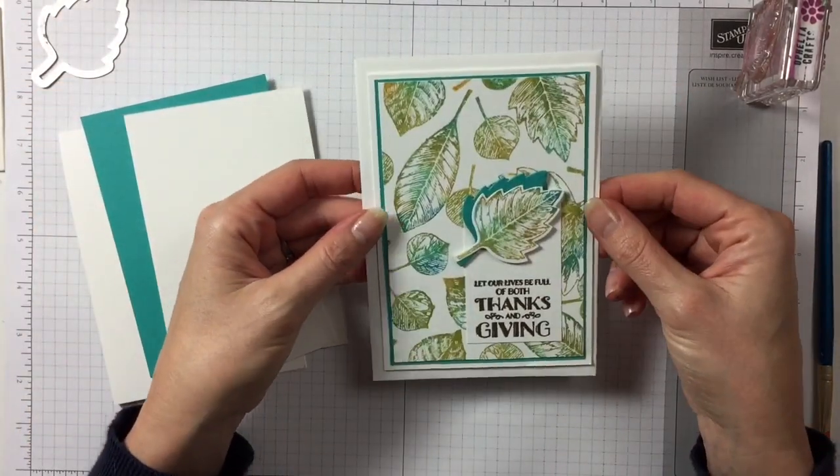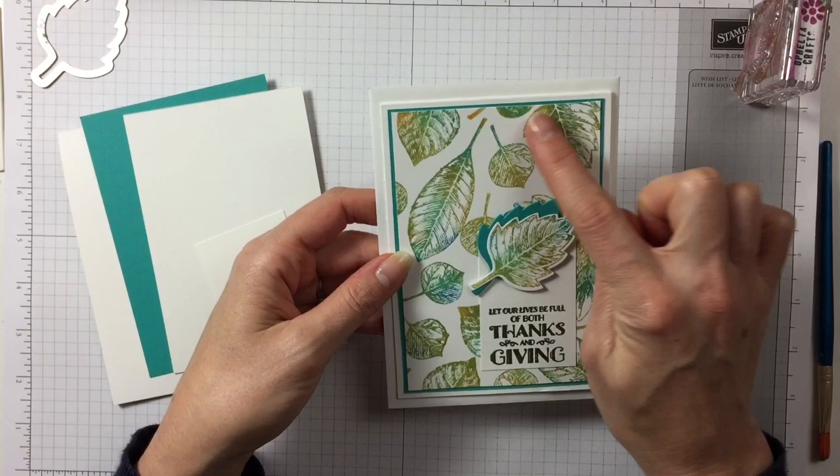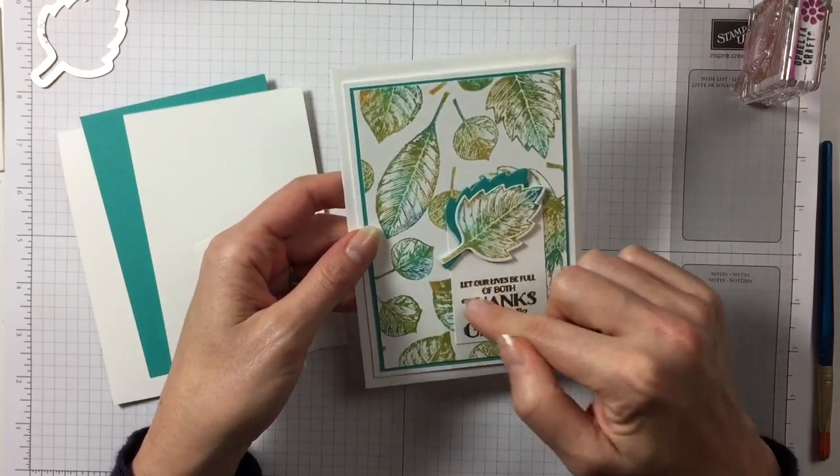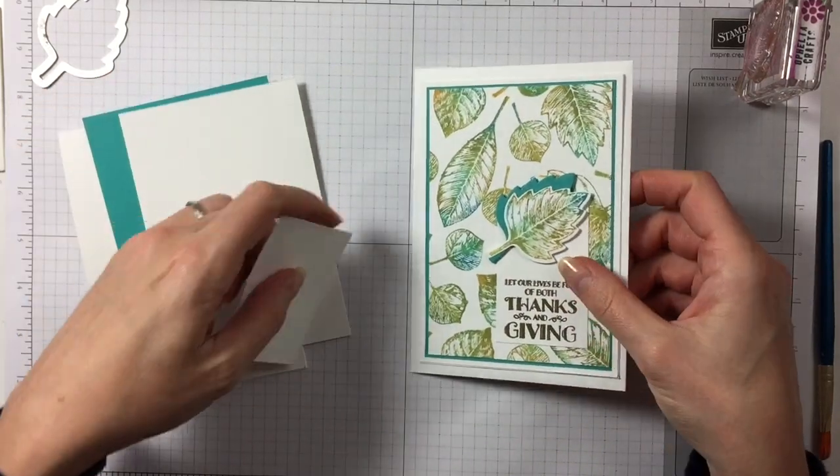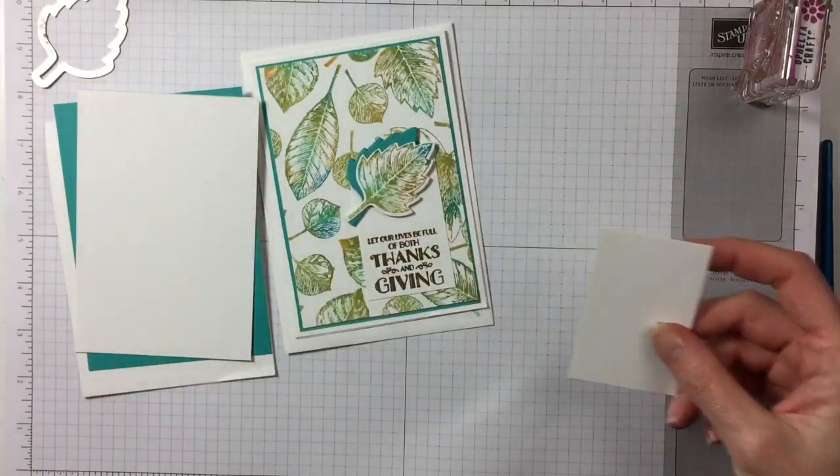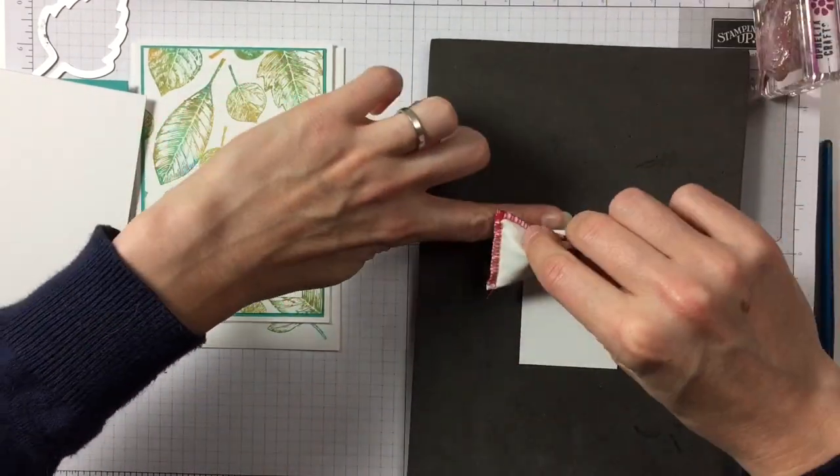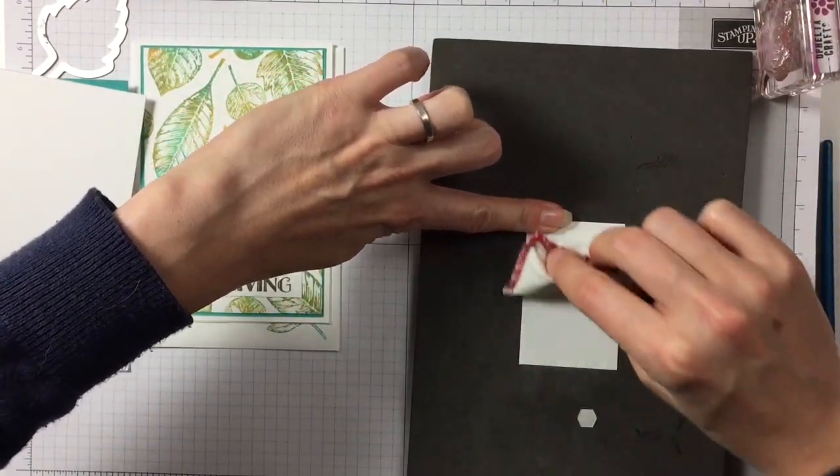And yes, so this is a card we are making. So as you can see, a background panel, lots of leaves and then this one here. So we're going to start with this one here and then we'll do the background panel in a moment. So let's put this on here. I'm going to put my embossing.